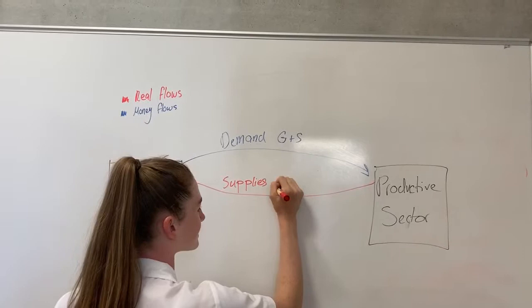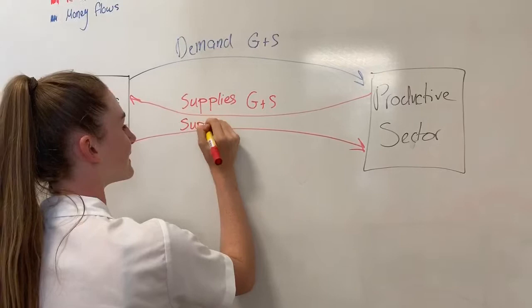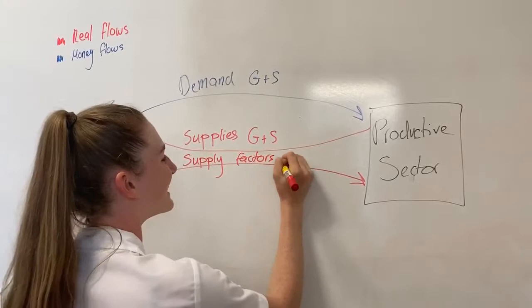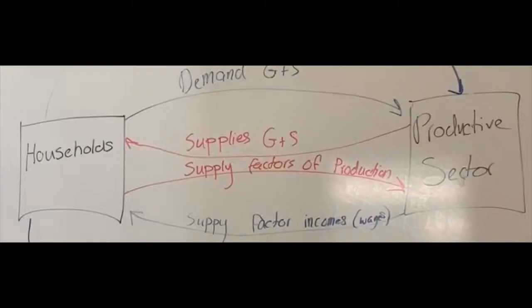Households supply factors of production. In return, the firms supply the households with the factor incomes. These are the wages.